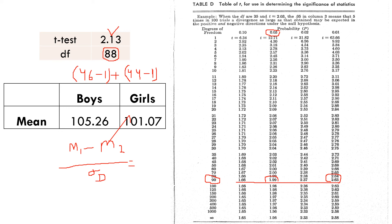The result is significant at the 0.05 level but not at the 0.01 level. The interpretation is that there is a significant difference between boys and girls. Based on the mean values, boys have more prosocial behavior than girls. It is significant but not highly significant — only at the 0.05 level.